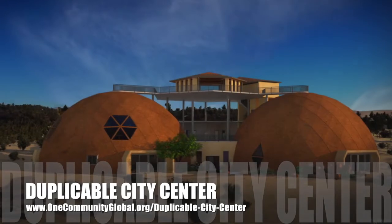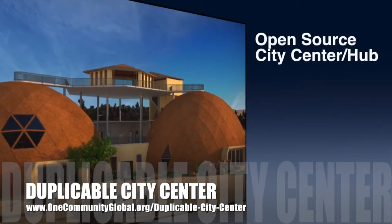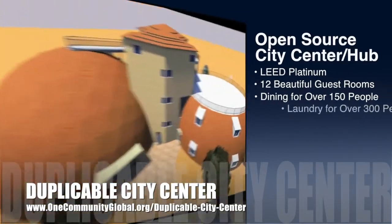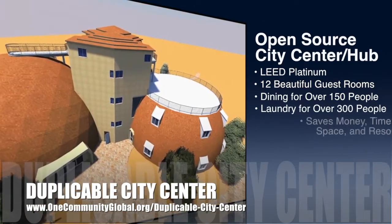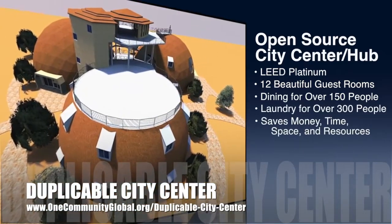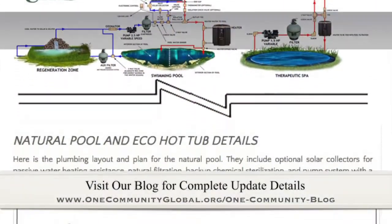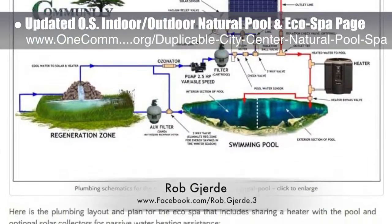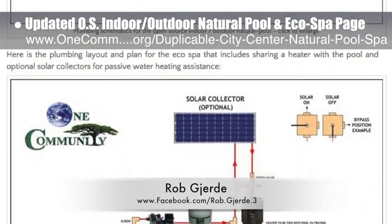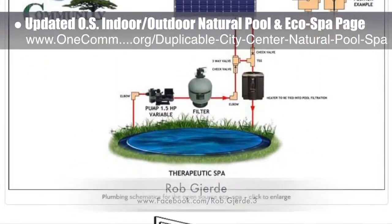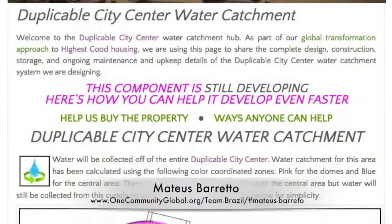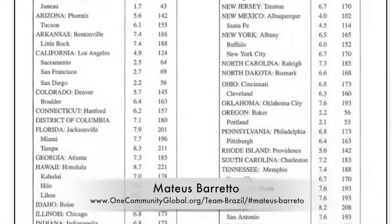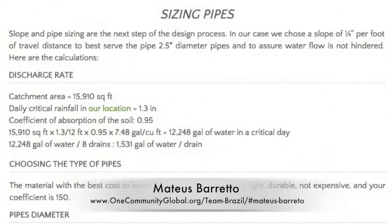OneCommunity is also creating an open source duplicable city center. It is designed to be LEED Platinum certified, provide 12 guest rooms, dining for over 150 people, and laundry and recreation space for over 300 people, all while saving money, time, space, and resources. This week, the core team updated the open source indoor-outdoor natural pool and eco-spa page with the plumbing design specifics of Rob Gerdy, pool design and construction expert and owner of Sorico Design and Consulting. Mateo Spargetto, civil engineering student specializing in hydraulics, also finished the calculations for the Duplo City Center water catchment specifics, including pipe sizing and selection.